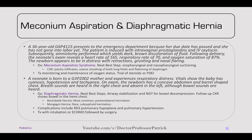A newborn has respiratory distress with cyanosis, hypotension, and tachypnea. On exam, there's a concave abdomen and barrel-shaped chest. Breath sounds are heard in the right chest and absent in the left, but bowel sounds are heard within the chest — diaphragmatic hernia. Next best steps are airway stabilization and NG tube for bowel decompression. The Bochdalek hernia is the most common, a posterior-lateral herniation. The Morgagni hernia is rare and is sub-xiphoid. Complications include RDS, pulmonary hypoplasia, and pulmonary hypertension. Treatment is intubation and ECMO followed by surgery.